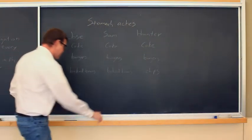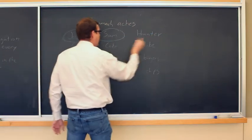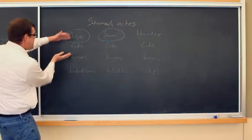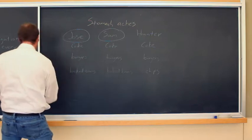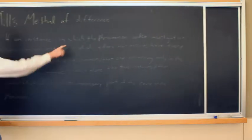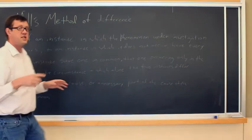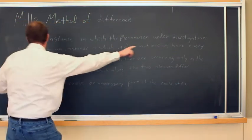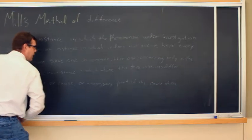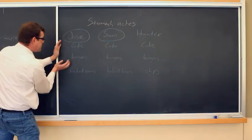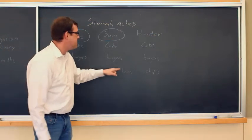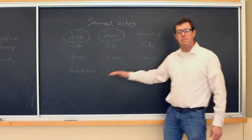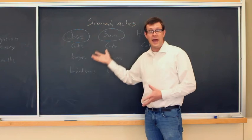Imagine we have people with gas. Jose has gas and Sam has gas, but Hunter doesn't. We look at what they ate: the first two both had Coke and burgers. So we have instances where the phenomenon occurs and where it doesn't. Everything is identical except one thing — Jose had baked beans, Sam had baked beans, but Hunter had chips. So it must be the baked beans causing the gas.